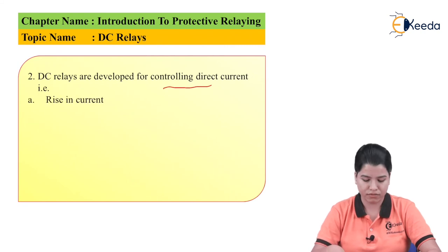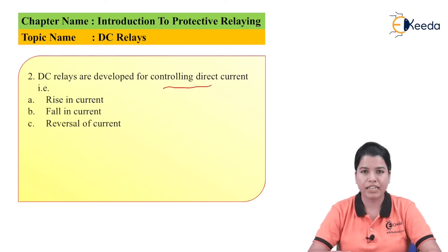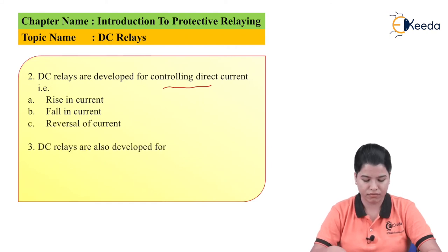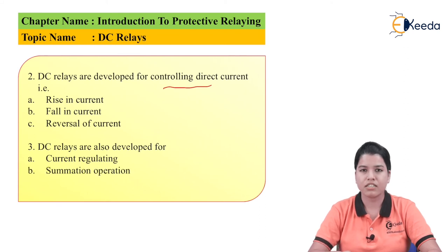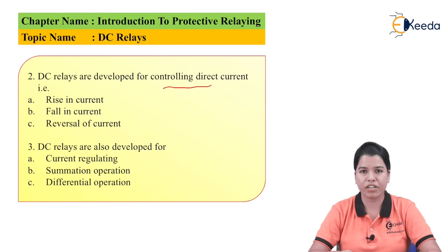DC relays are developed for controlling the direct current circuit — that is, rise in current, fall in current, and reversal of current. DC relays are also developed for current regulating, summation operation, and differential operation. These are the various applications in which DC relays are used.